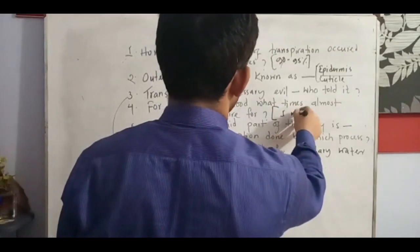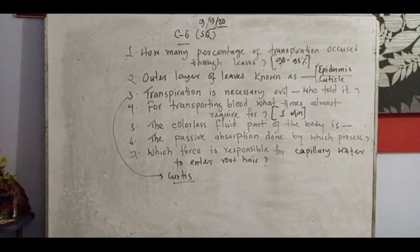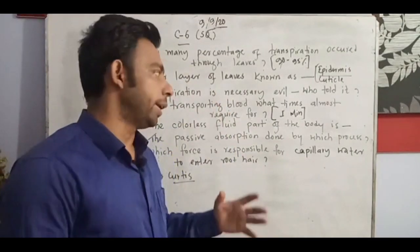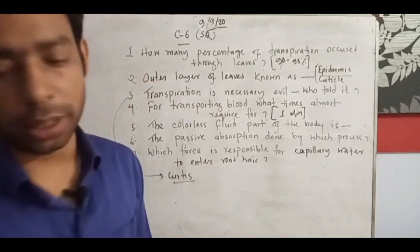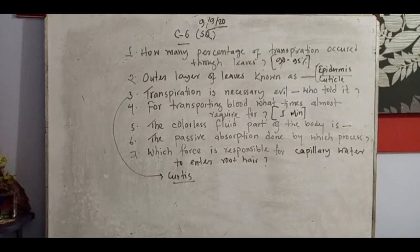For transporting blood throughout the body, how much time is required? It is almost around one minute — it can be a few seconds less or more, but actually it is going on through almost around one minute. Transporting blood from the brain to any parts, or throughout the whole body, it needs almost about one minute. The colorless fluid part of the body — there are many kinds of fluid in the body.